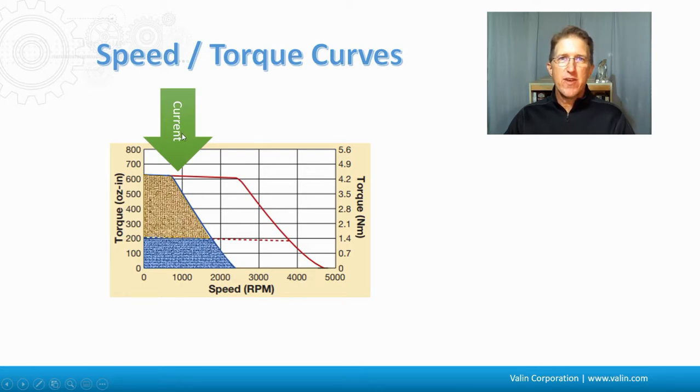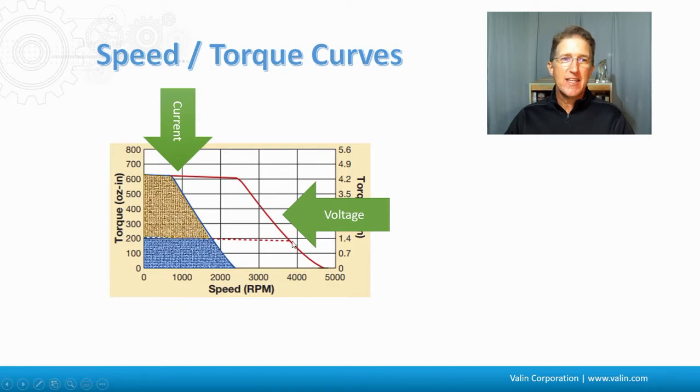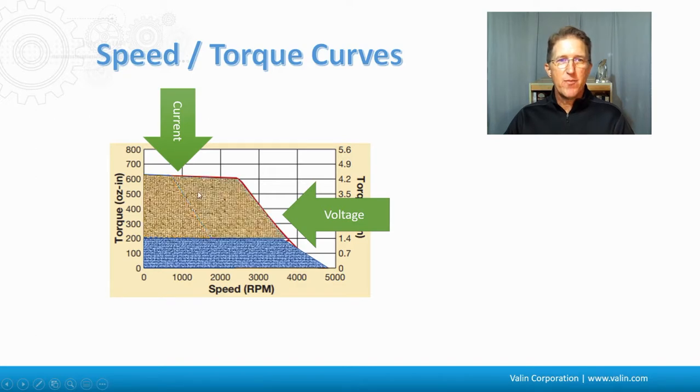The current that is available affects how much torque capability we have here, how much current the drive can put out, and how much bus voltage the drive has. That's the voltage potential that is inside the drive in the PWM switching frequency. Go back to a previous episode to understand that. That bus voltage capability is what defines this here. And again, at this higher voltage, we get more continuous and more peak there.